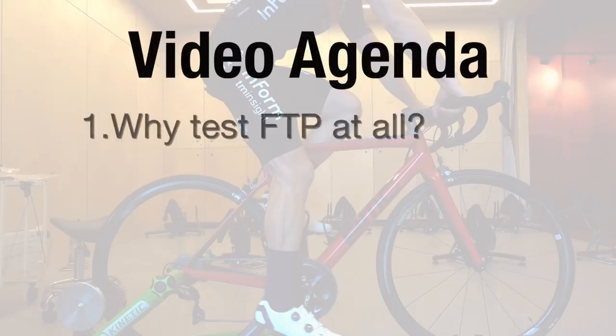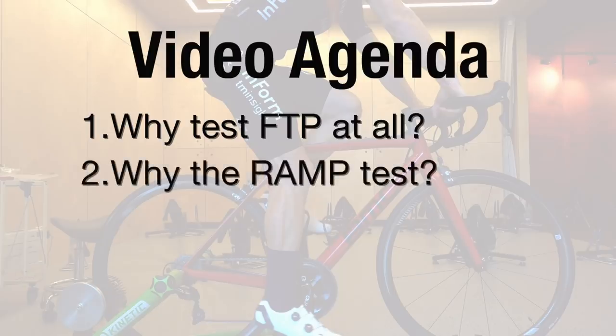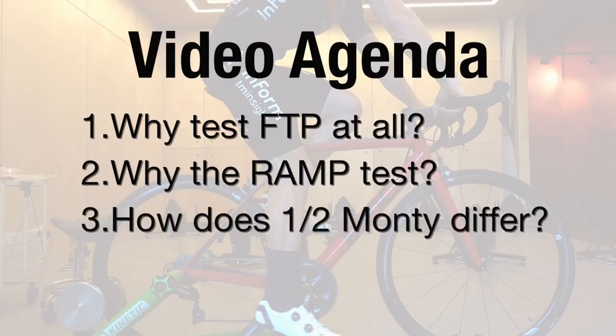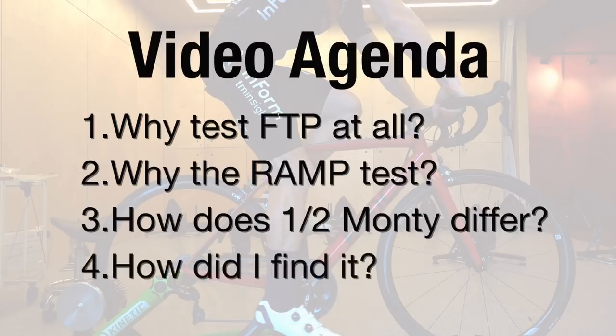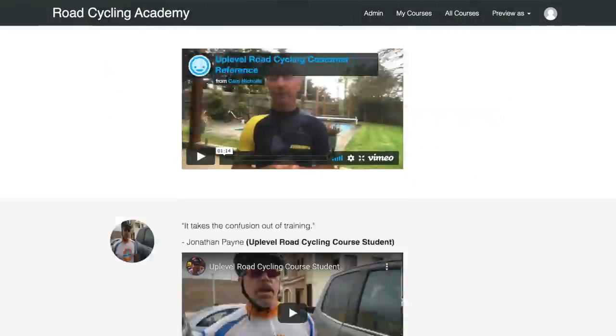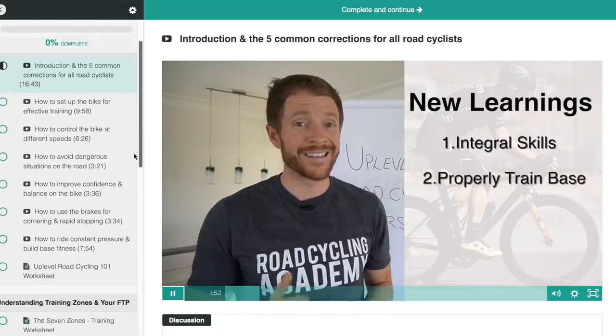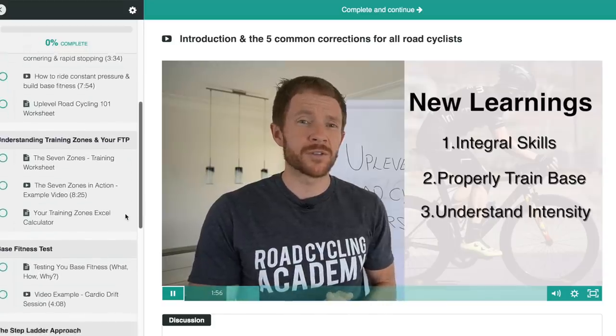We're going to break this video into four main parts: number one, why test your functional threshold power in the first place; number two, why should you choose the ramp test over other testing protocols, including what the ramp test actually is; number three, how does the Half Monty work, which goes beyond just FTP; and number four, my experiences with the test and why it's becoming the new testing protocol for members of the Up Level Road Cycling course. This video is not sponsored by the Sufferfest, however the application is used by members of the Up Level Road Cycling course, an online coaching course to take road cyclists' performance to the next level.